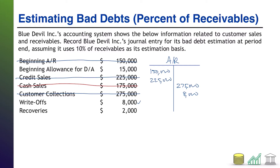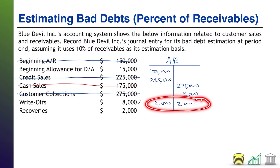Recoveries actually have a net zero impact to AR because they impact AR from both directions. When you recover an account, what that means is part of that write-off ends up getting paid. In order to collect the money, you first have to undo the write-off and put the AR back on the books — debit AR. But then because you're getting paid, the AR is going to come right back off the books, and those two impacts cancel each other out. I'm going to put a check mark next to that because AR is not the only thing impacted by recoveries.